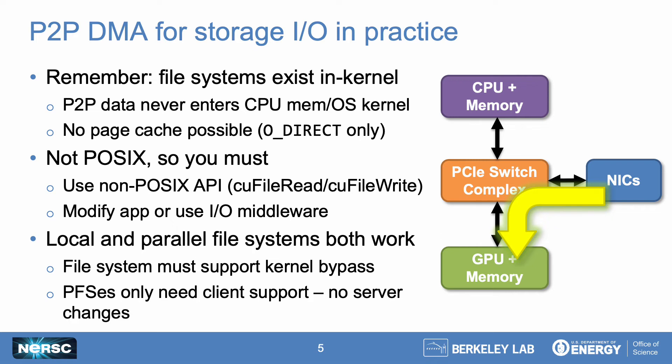Because peer-to-peer DMA is fundamentally a PCIe-based technique, it can work for both file systems on locally attached NVMe and network file systems. However, your file system does need to support GDS to get the full performance benefits of CPU bypass. The good news is that many of our favorite parallel file systems like Lustre, Spectrum Scale, and VAST already support GDS, but not all of them do yet.